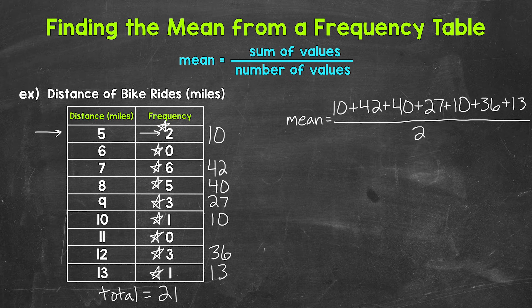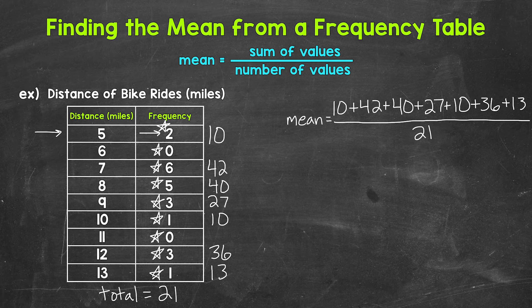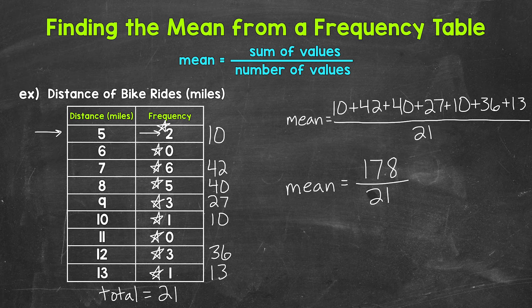So we divide our sum of the values by 21. Now we're ready to add and then divide. 10 plus 42 is 52. Plus 40 is 92. Plus 27 is 119. Plus 10 is 129. Plus 36 gives us 165. Plus 13 gives us 178. So our mean equals — the sum of our values is 178, and we need to divide that by 21. 178 divided by 21 gives us 8.476.